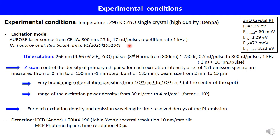Remember that in 1 nanojoule there are around 10^9 photons at 266 nm. The Z-scan setup controls the density of primary electron pairs. For each excitation density, a set of 151 emission spectra are measured from Z = 0 mm to Z = 150 mm with 1 mm step. The beam size can vary from 2 mm to 15 micrometers. In these conditions, a very broad range of excitation densities is available from 10^16 to 10^22 per centimeter cubed. For each excitation density and emission wavelength, we also measure the time-resolved decays of the photoluminescence emission. Our detection system includes an ICCD camera, a spectrometer with spectral resolution around 10 nm per millimeter of slits, and a multichannel plate photomultiplier with 40 picosecond time resolution.